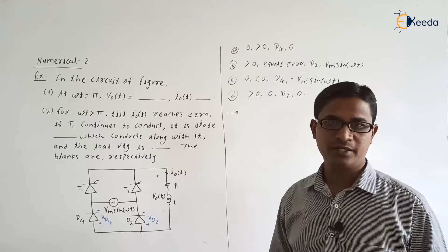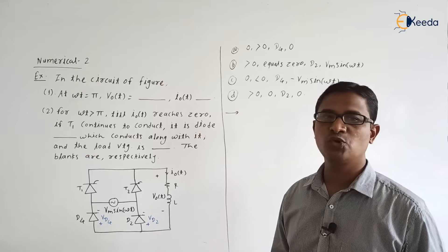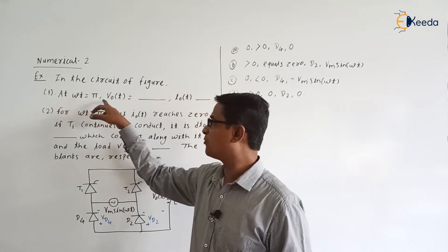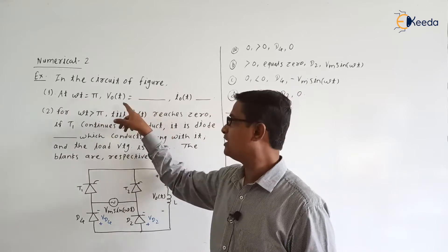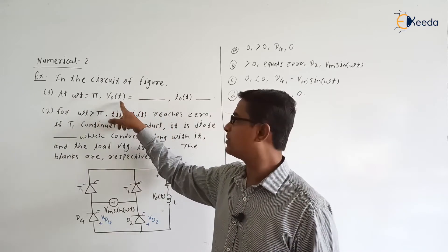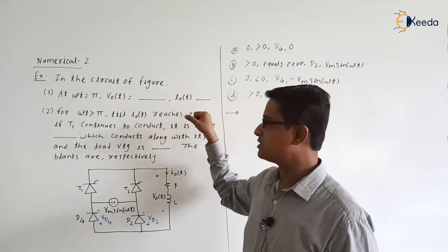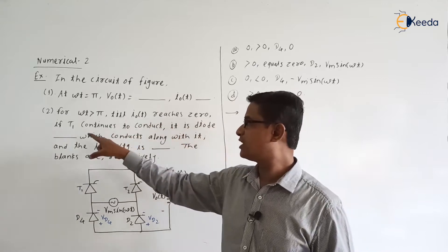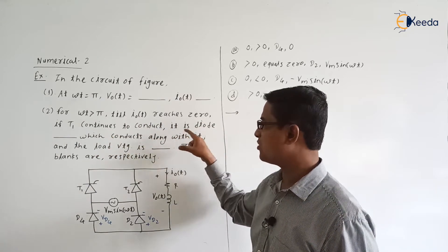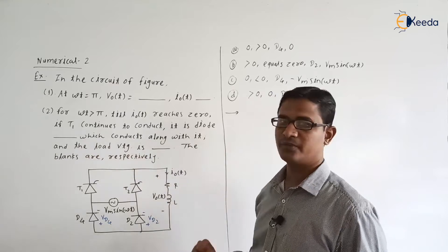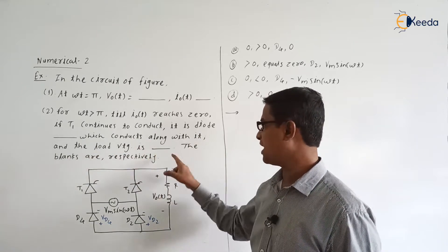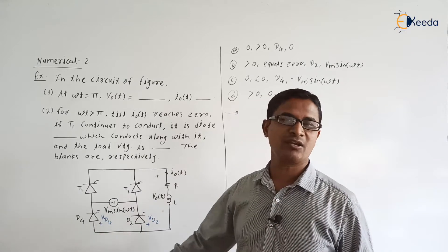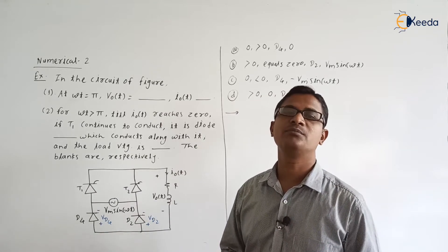In the circuit of figure, at omega t equal to pi, V zero of t is blank — meaning what is the value of V zero of t? I zero of t is also blank. Second, for omega t greater than pi, till I zero of t reaches zero, if T1 continues to conduct, it is diode blank which conducts along with it, and the load voltage is blank. The blanks are respectively. It is a symmetrical configuration of the half-controlled bridge rectifier.